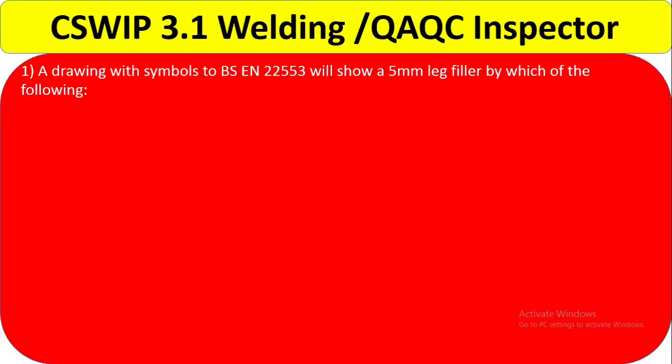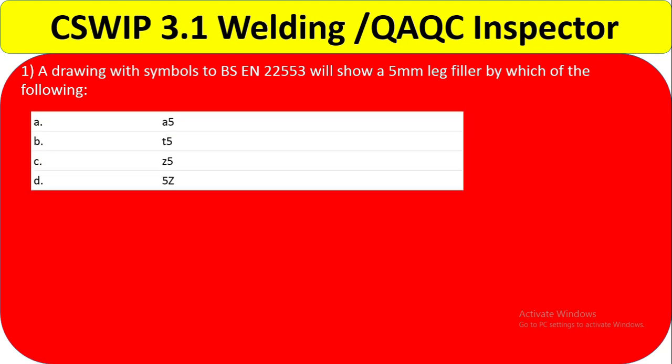The first question: a drawing with symbol to BSEN22553 will show a 5mm leg fillet by which of the following? Option A is A5, option B is T5, option C is Z5, and option D is 5Z.